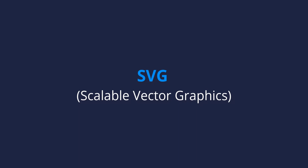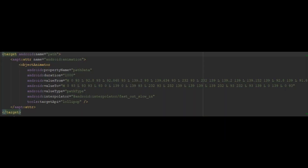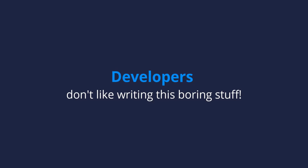SVGs are made up from path data, among other things. So if we want to create a vector shape in Android Studio XML, we need to write down path commands and a few other things, which look something like this. Many developers don't like writing this by hand — it's too annoying and time-consuming. That's why we're going to use vectors to create beautiful animations in Android Studio.